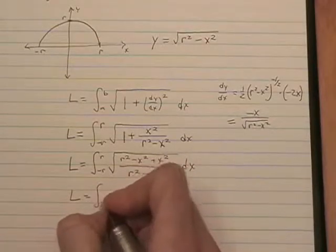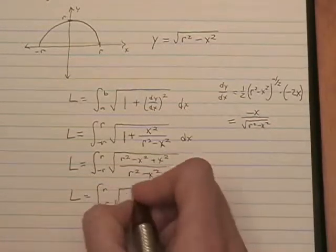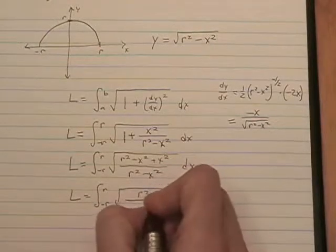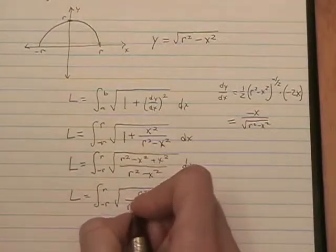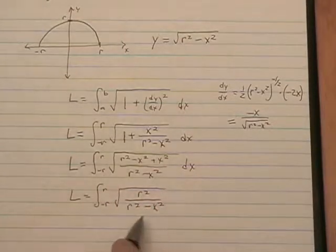Now a mistake when people are working with these square roots that students often make is at this point they say, hey, that's just going to be r over r minus x. But you can't do that.